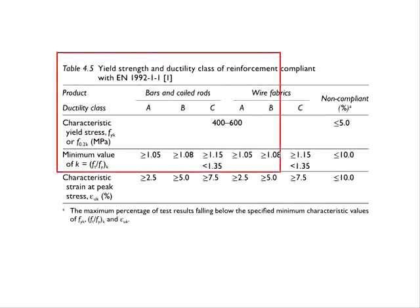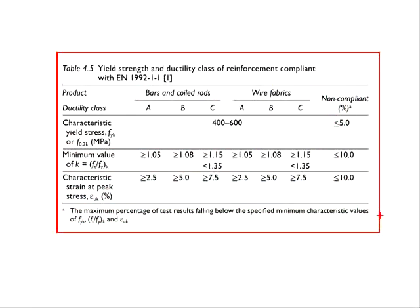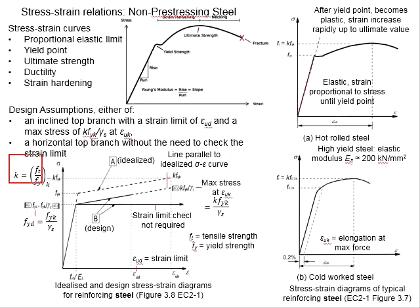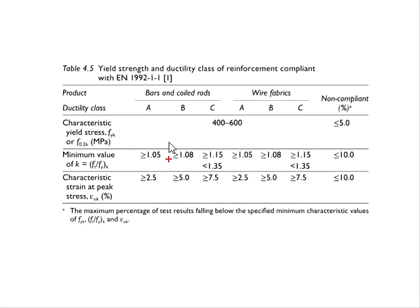This table shows the yield strength and ductility class of the reinforcement, with the characteristic strength of 400 to 600. The minimum value of K, which is defined by the ratio of the ultimate strength divided by its yield strength, are given here. And its ultimate strain are given here as well.